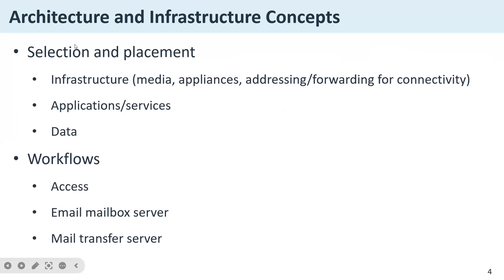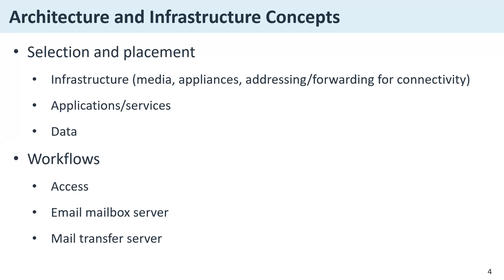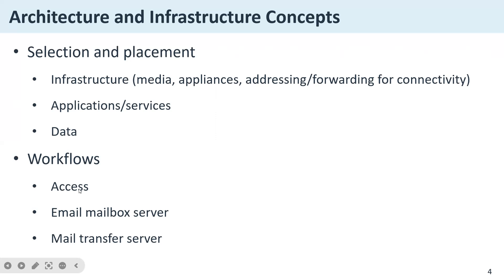The first consideration is selection and placement — how to sort out your infrastructure, media, plans, logical addressing, packet forwarding, applications, services, data structure, and workflows. If you have a mail server or file server locally, how do you structure that?